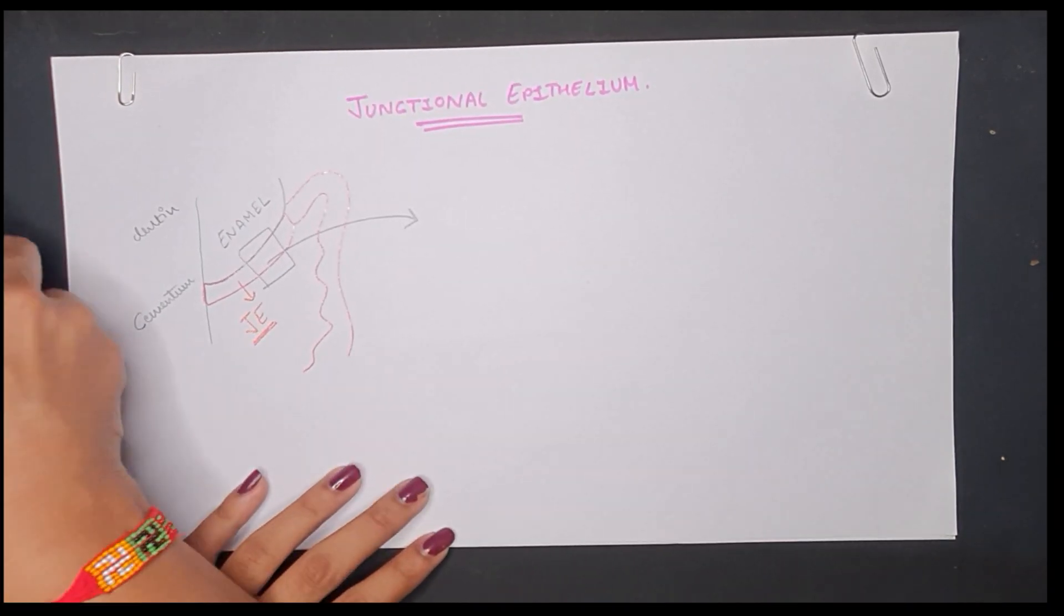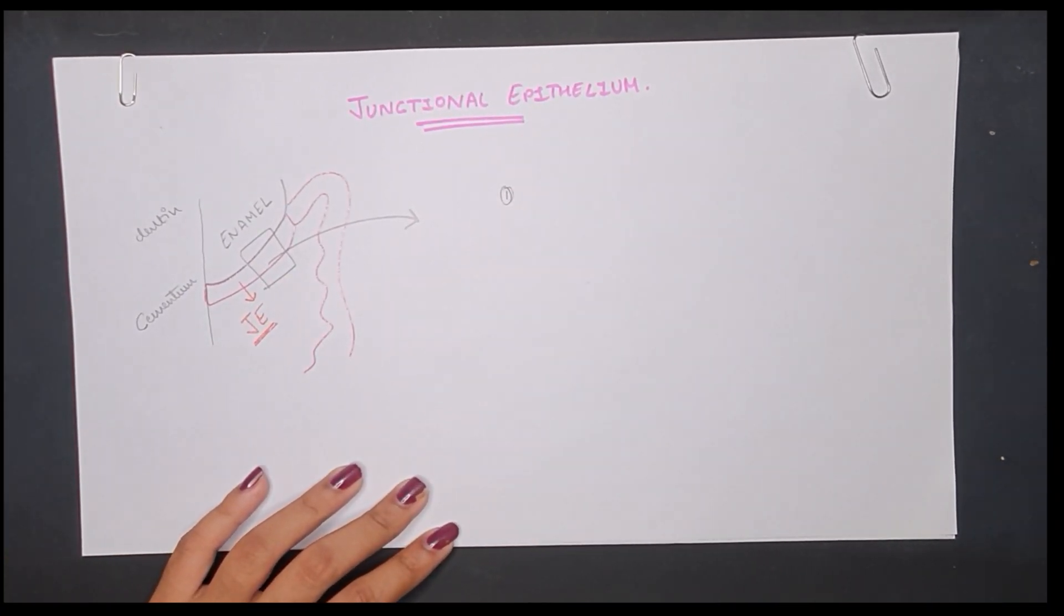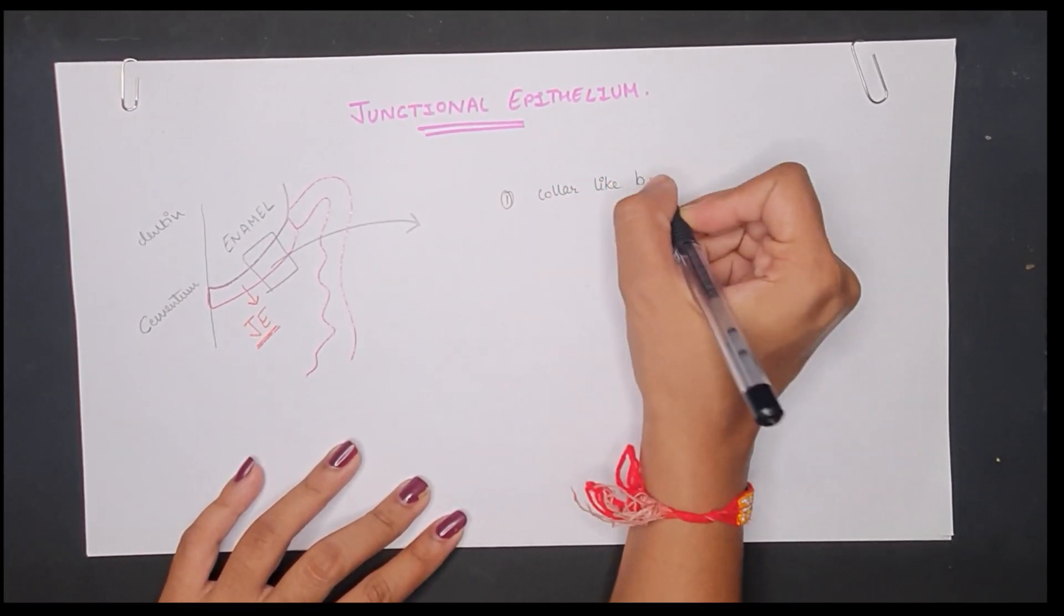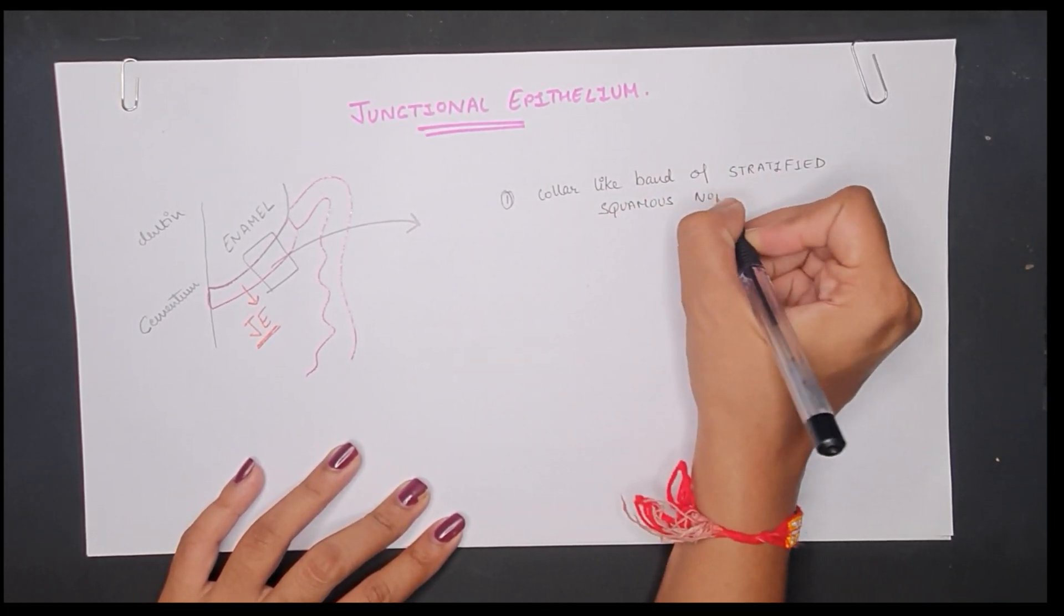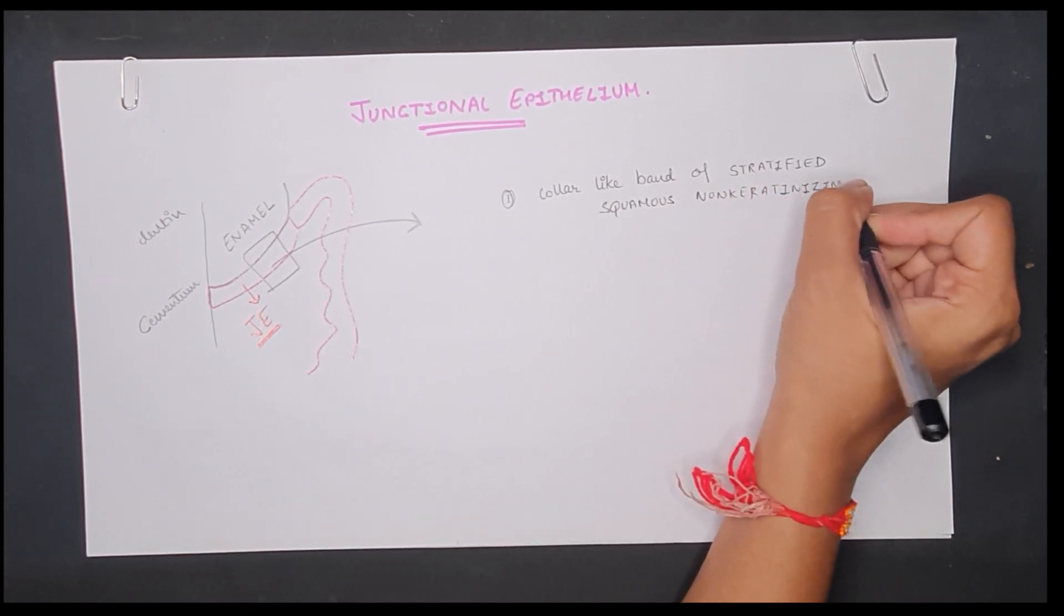Junctional epithelium consists of a collar-like band of stratified squamous non-keratinizing epithelium. It is like a collar with a cross section resembling a thin wedge.